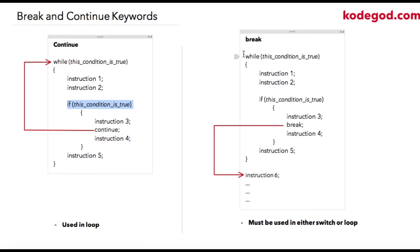Now let us check the break keyword. Again, the break keyword can be used either in switch or a loop. I am writing this example with a while loop. So until my while condition is true, these two instructions will be executed. I am adding another condition over here, so if this condition is true, instruction 3 will be executed.